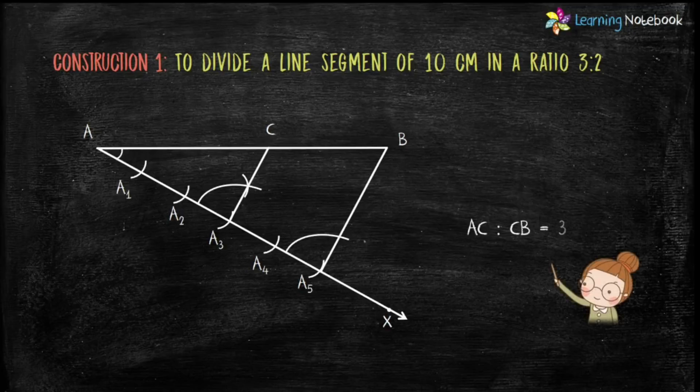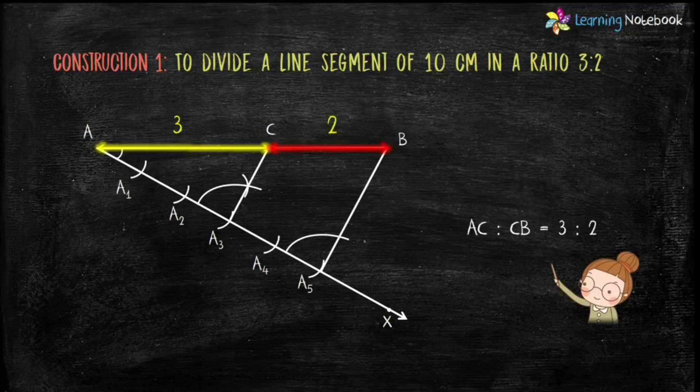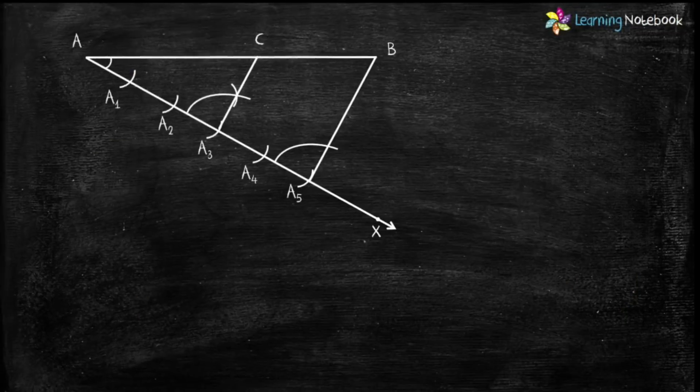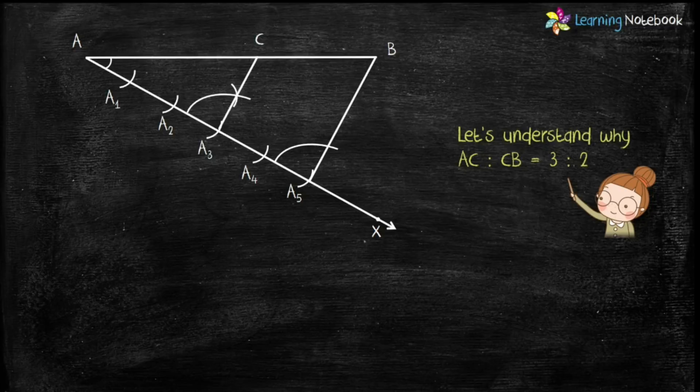Now students, AC:CB = 3:2. So in this way, you can divide any line segment in a given ratio. Now let's understand why AC:CB = 3:2.